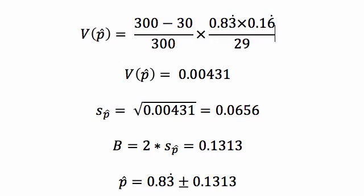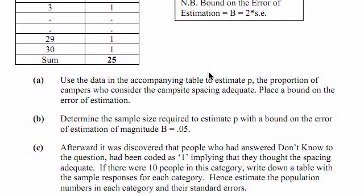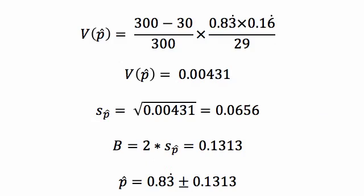Let's have a look at question B. Determine the sample size required to estimate P with a bound on the error of estimation of magnitude 0.05. We found the bound in the previous example was 0.1313.